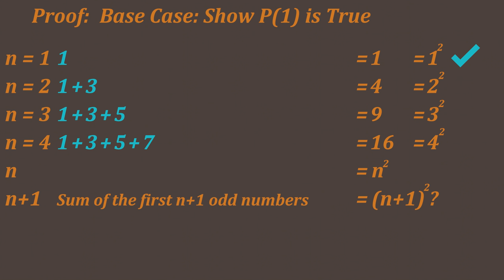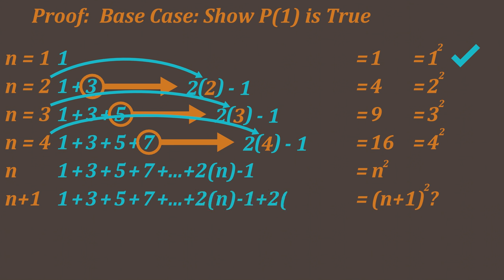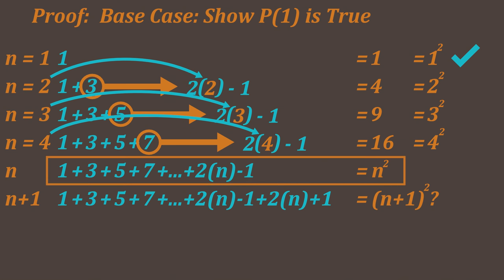We can write the sum of the first n odd numbers as 1 plus 3 plus 5 plus all the way up to 2n minus 1. We can write the sum of the first n plus 1 odd numbers as 1 plus 3 plus 5 plus all the way up to 2n minus 1, plus the next odd number, which will be 2n plus 1. By our induction hypothesis, we know that the sum of the first n odd numbers is equal to n squared, which means that 1 plus 3 plus 5 all the way up to 2n minus 1 is equal to n squared. This means for the sum of the first n plus 1 odd numbers, we can substitute n squared in for 1 plus 3 plus 5 all the way up to 2n minus 1, and be left with just n squared plus 2n plus 1.